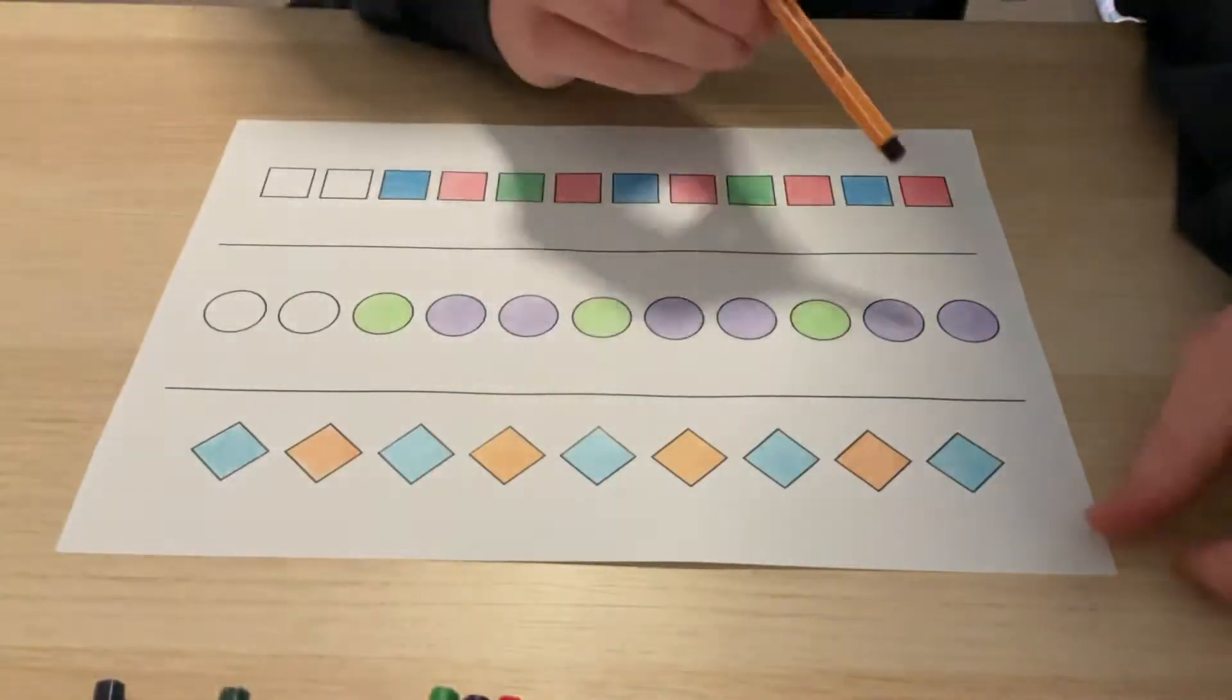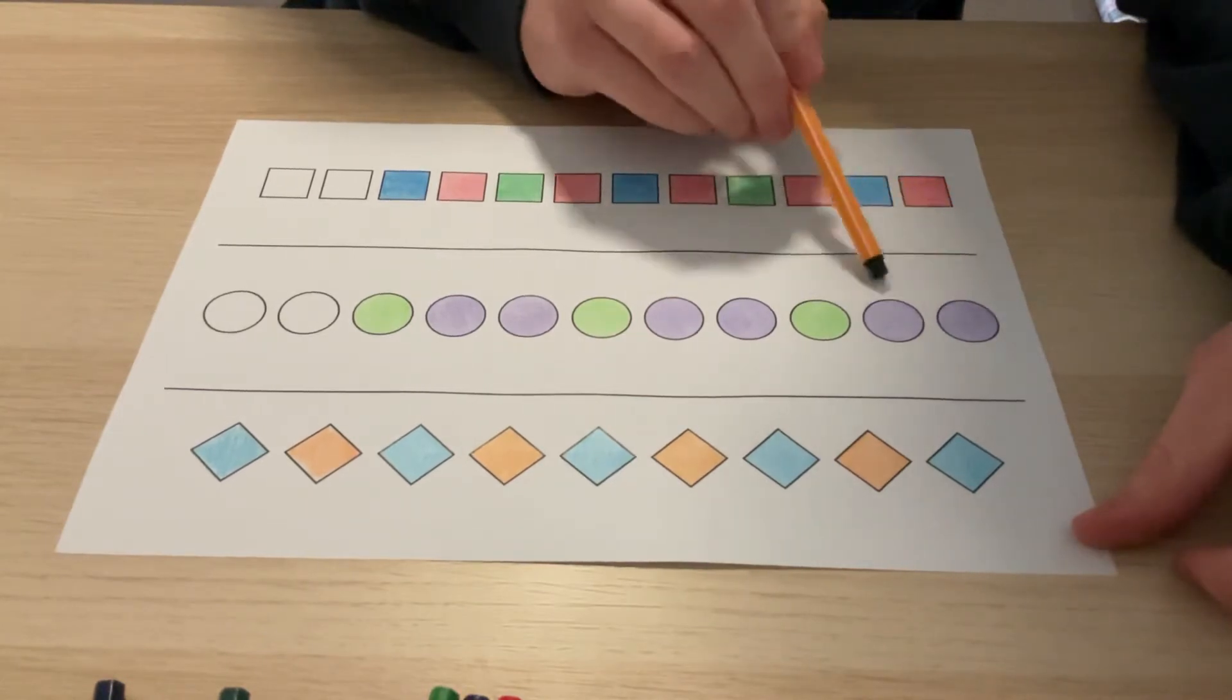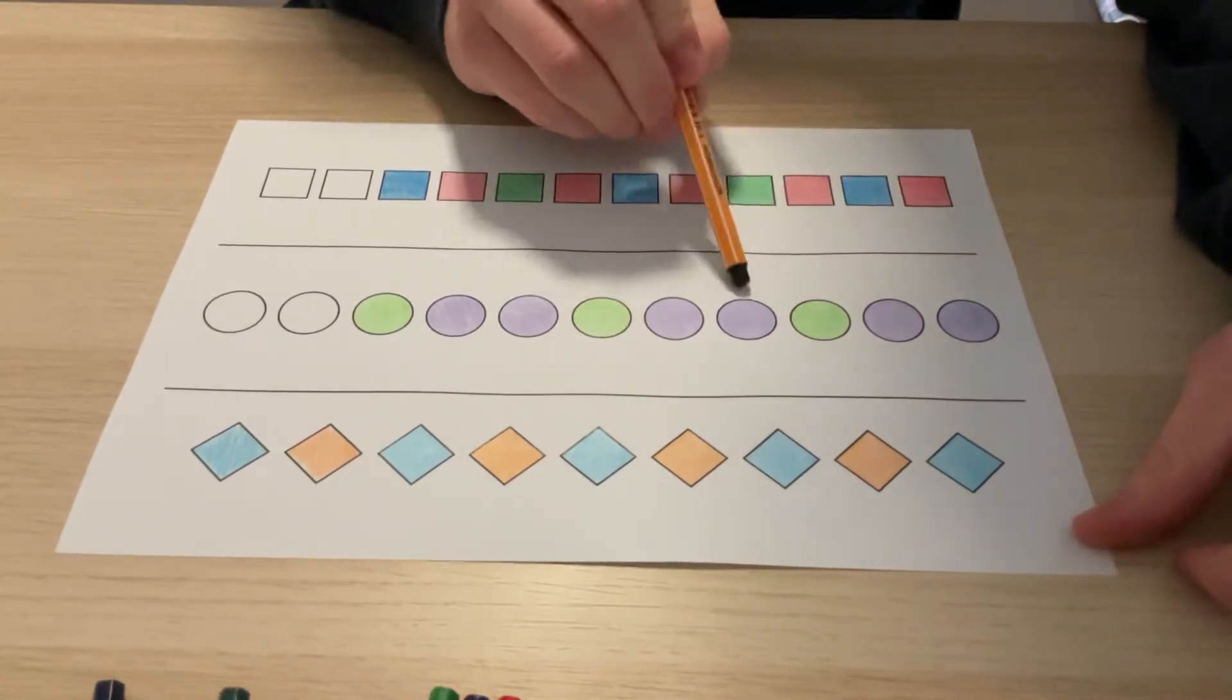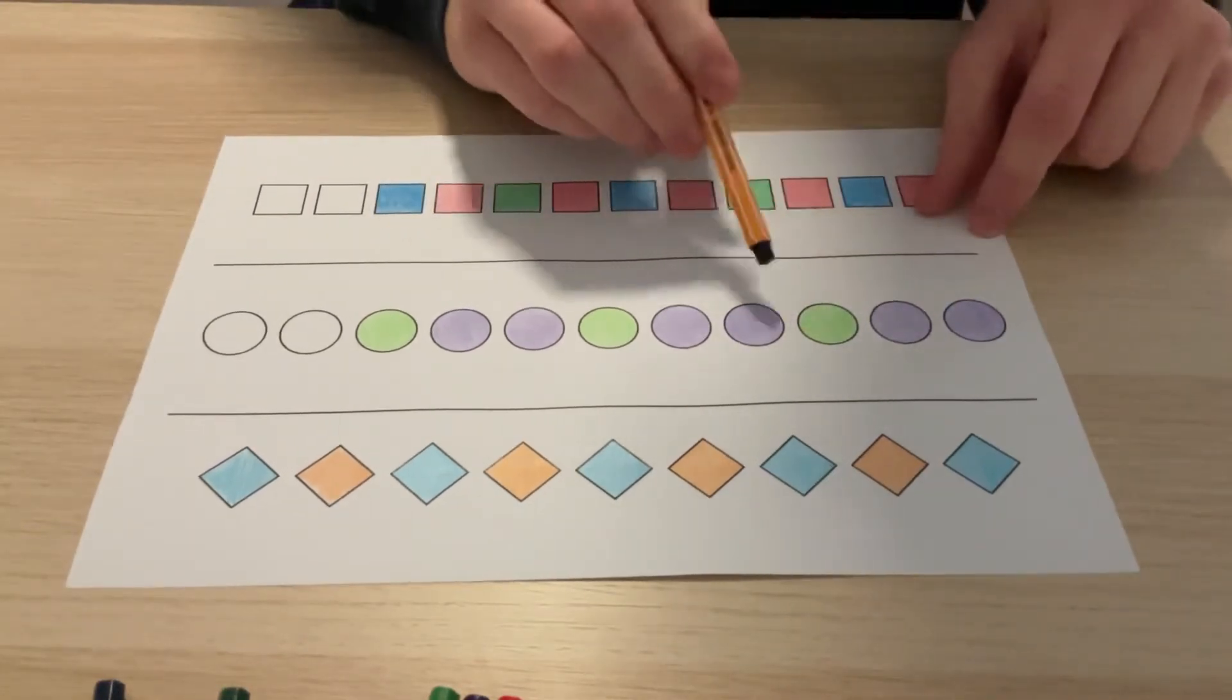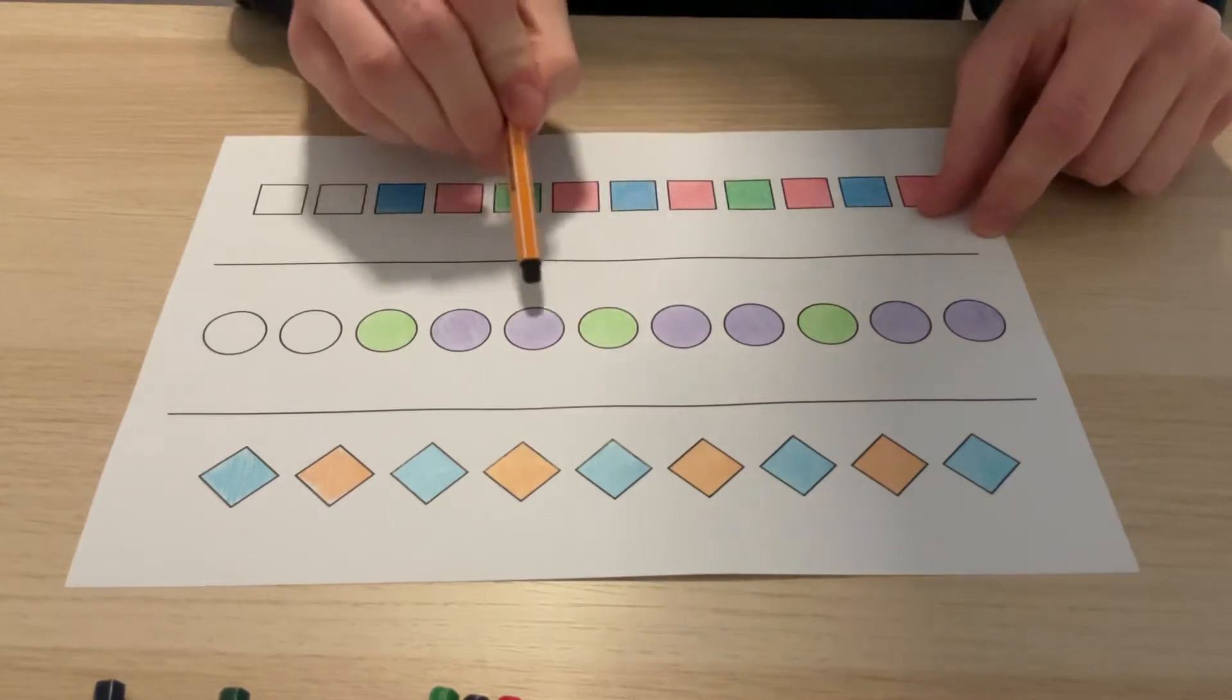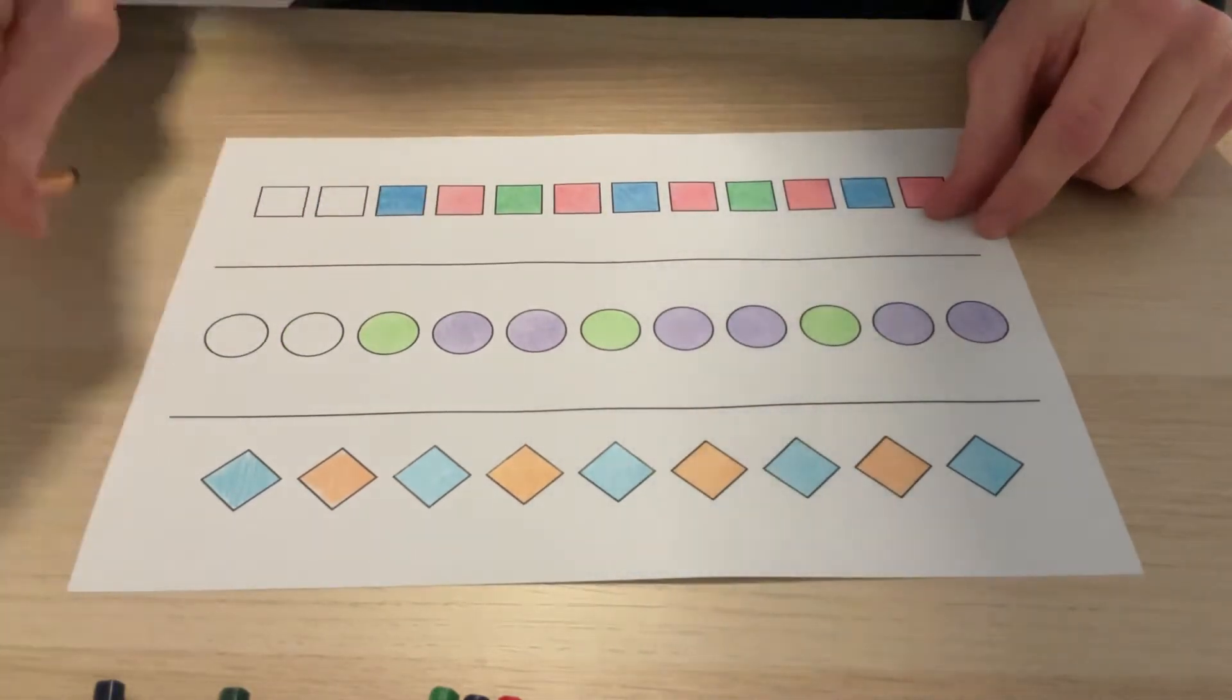The next one's a little bit trickier. So instead of just going one color repeating, it's got purple, purple, green, purple, purple, green. So this is going to be our sequence, and then it just repeats again: purple, purple, green, purple, purple, green, purple, purple, green, which means this will be the start of a new sequence. So this will be purple, purple again, so we can fill that one in quickly.